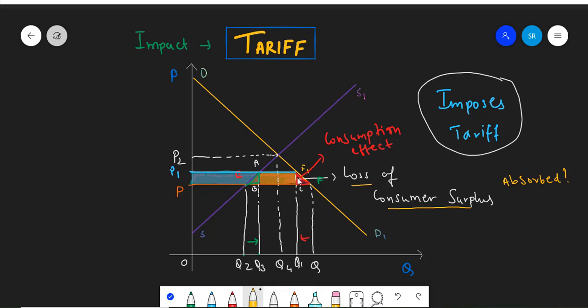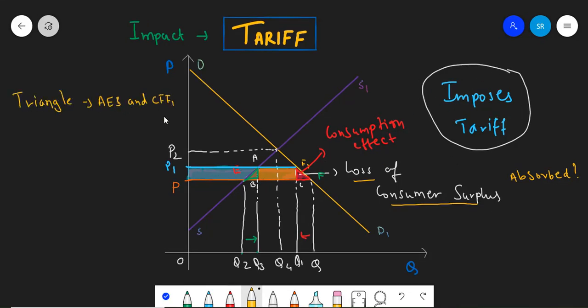However, the loss of consumption and the increased marginal cost for the producers are also the consequences of the increased tariffs, which do not get absorbed. Hence, these triangles together cause a deadweight loss to the society.